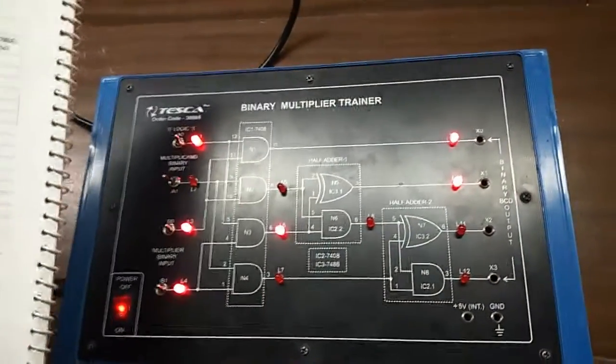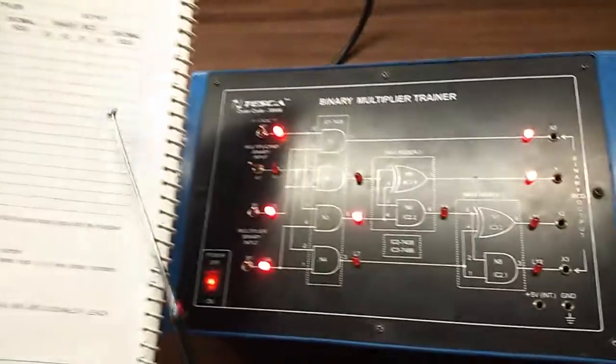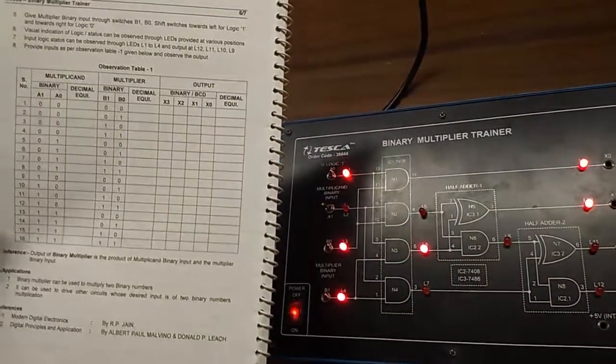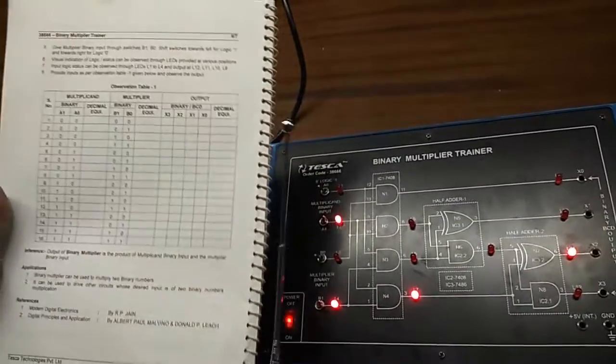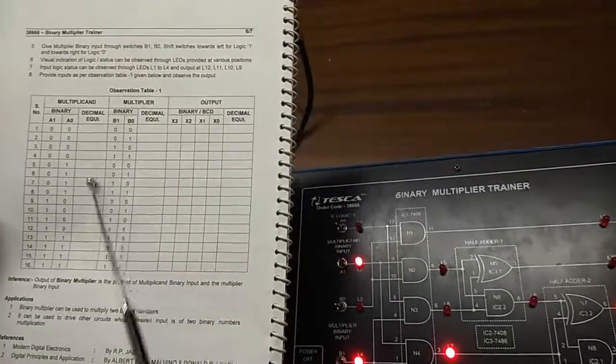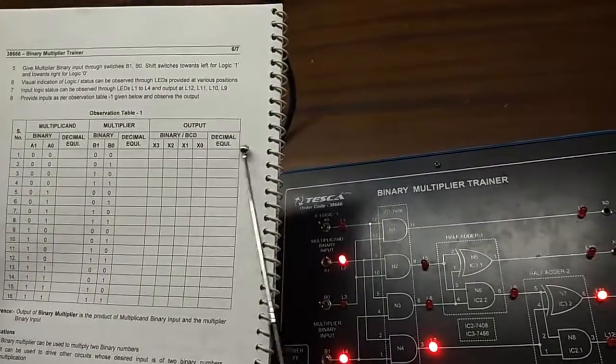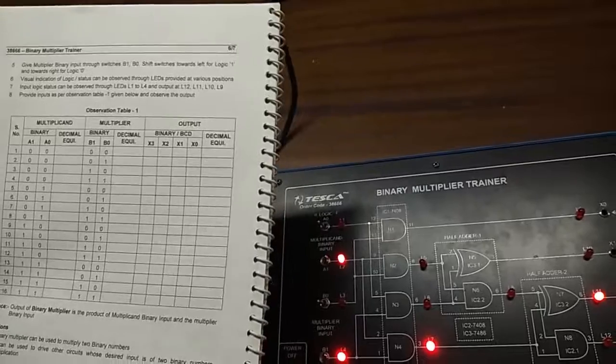Like this you can check the rest of them and note down your observations here in this table. Also write the decimal equivalent here and here and compare your binary result with your decimal equivalent.